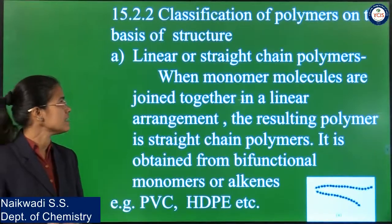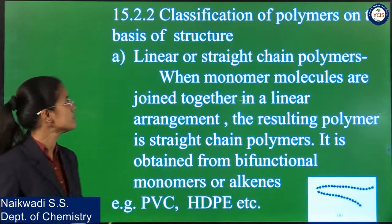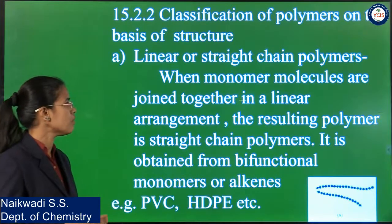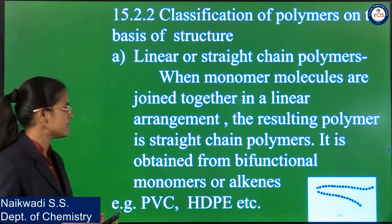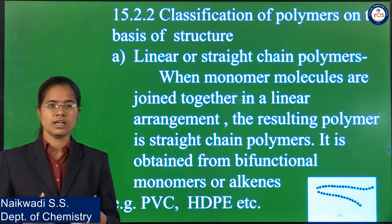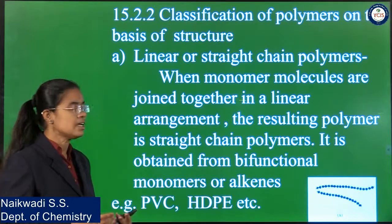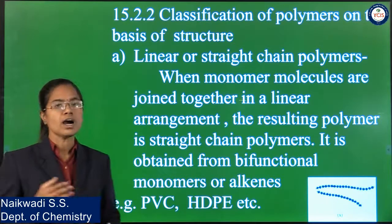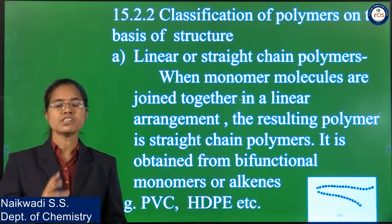Another way to classify polymers is on the basis of their structure. The first type is linear or straight-chain polymers. When monomer molecules are joined together in a linear arrangement, the resulting polymer is a straight-chain polymer — they form a longer straight-chain molecule. These are obtained from bifunctional monomers or alkenes.